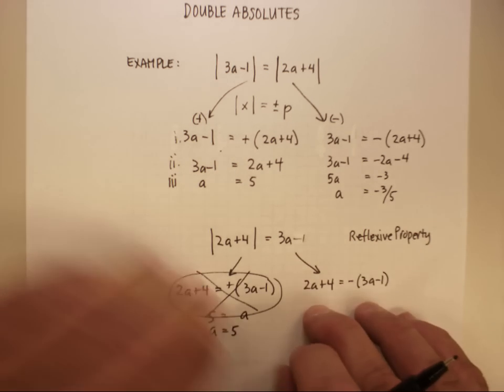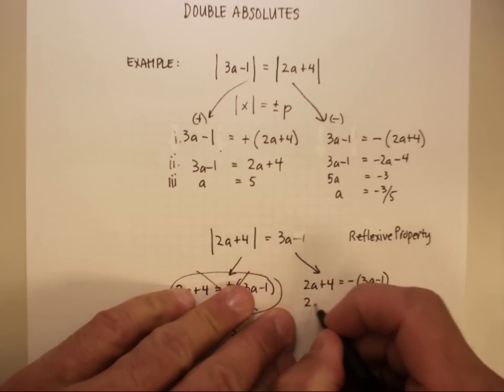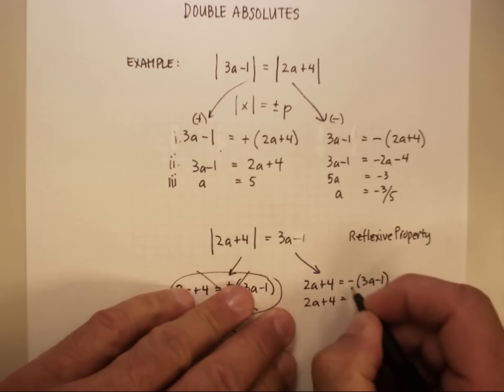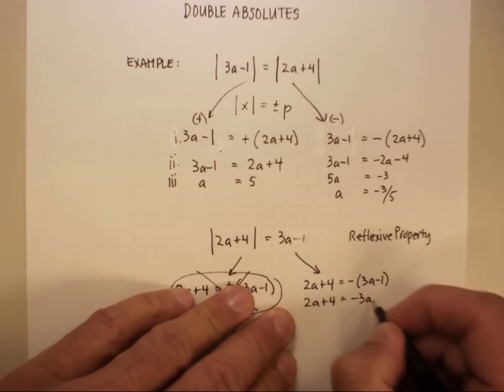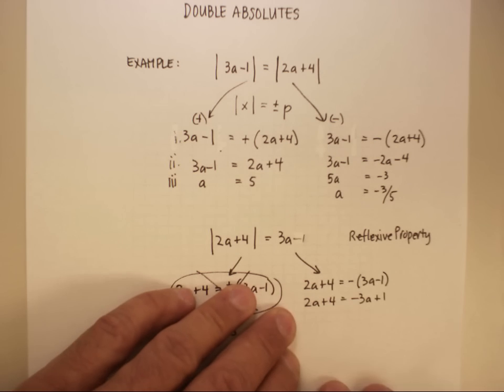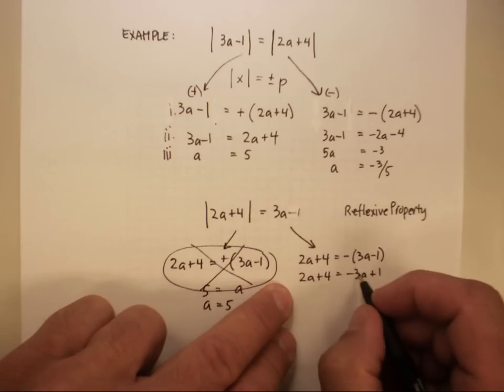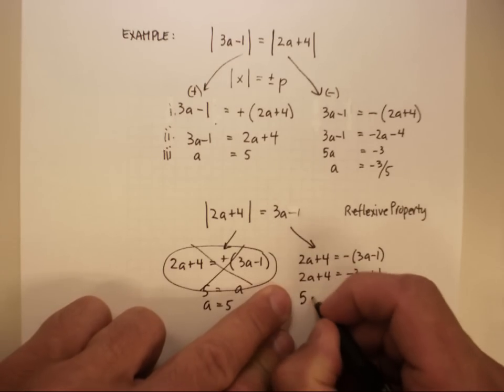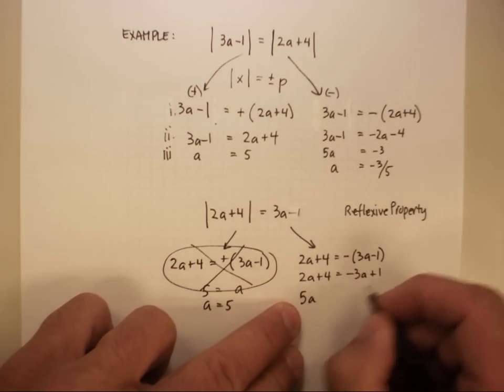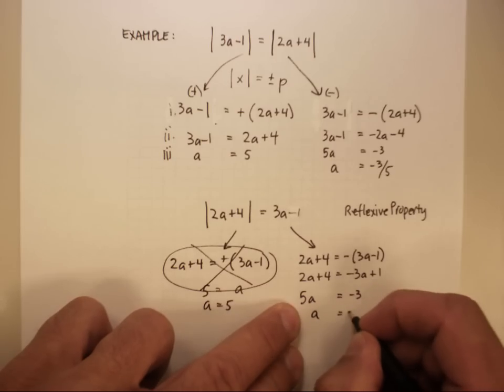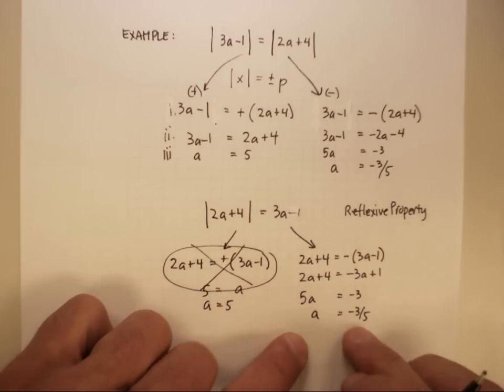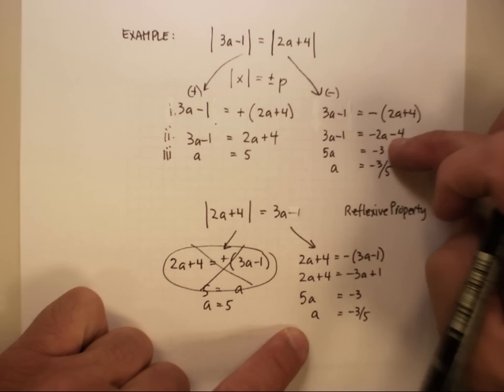How about this one over here? Let's just go 2a plus 4, let's distribute the negative. All right, and let's go ahead and solve it. Let's add 3a to this side, let's subtract 4 from this side. And look what you get, a is equal to negative 3 fifths. In other words, you get the exact same thing as what's up here.